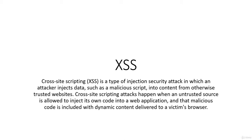A cross-site scripting attack happens when an untrusted source is allowed to inject its own code into a web application. Anything in the web is treated as trusted, so when malicious code is injected into the web application it is allowed to execute. The malicious code is included with the dynamic content delivered to the victim's browser. This relates to the stored XSS attack — we'll see the types of XSS attacks in the upcoming lecture.